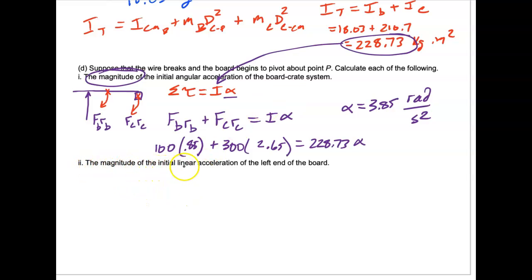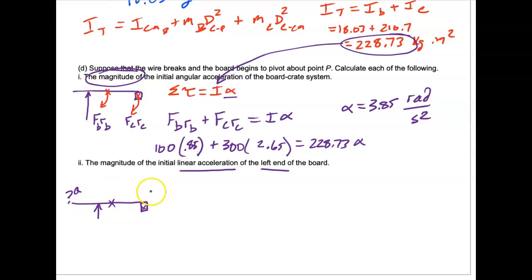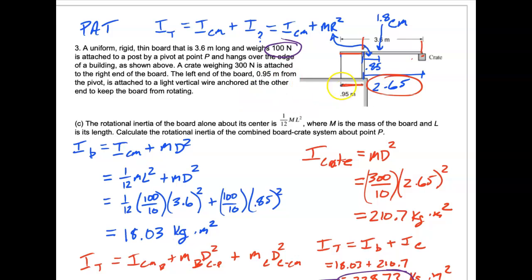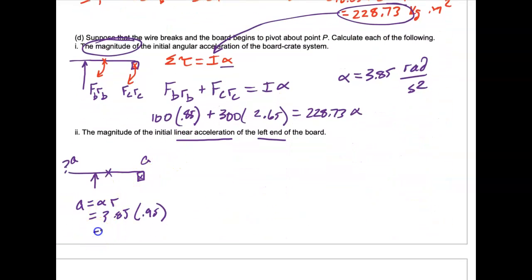Now they want the magnitude of the initial linear acceleration of the left end of the board. We use A equals alpha times R. That's 3.85 times 0.95, because 0.95 is the distance from the pivot point to the left end of the board. That gives 3.66 meters per second squared. So the tangential acceleration at the left end of the board is 3.66 m/s².